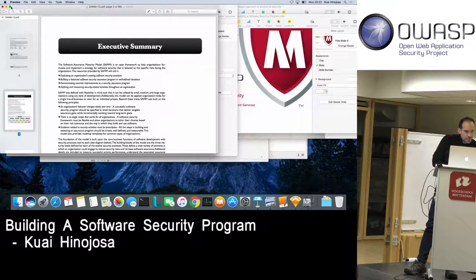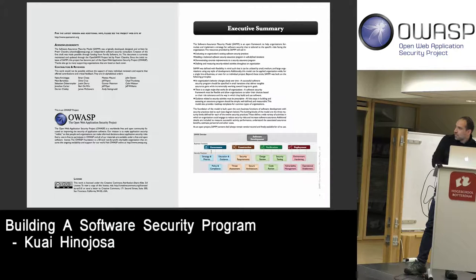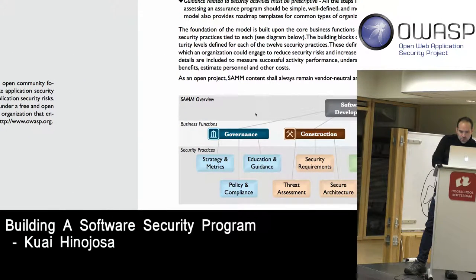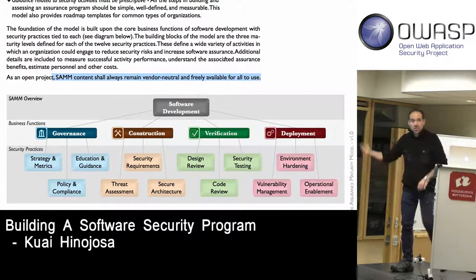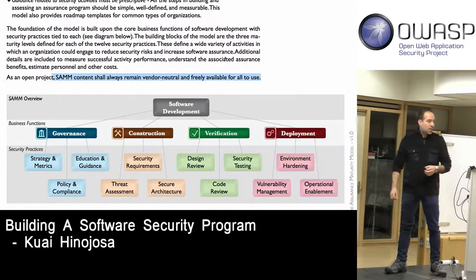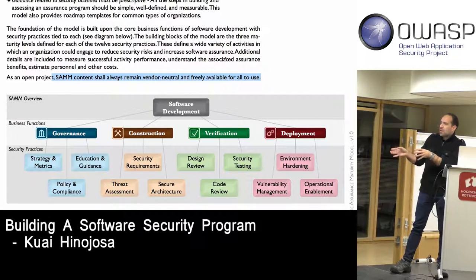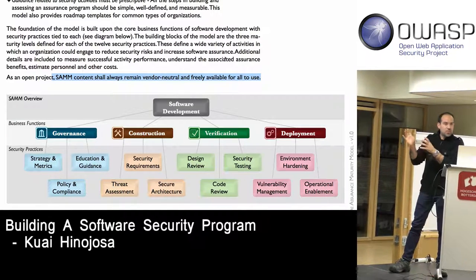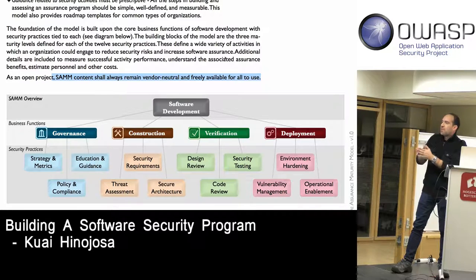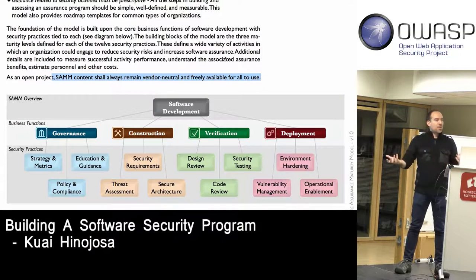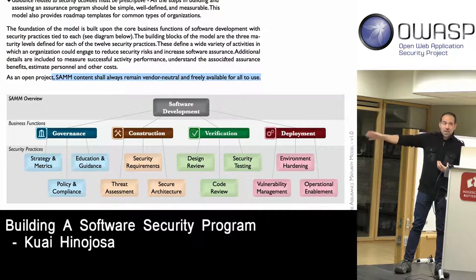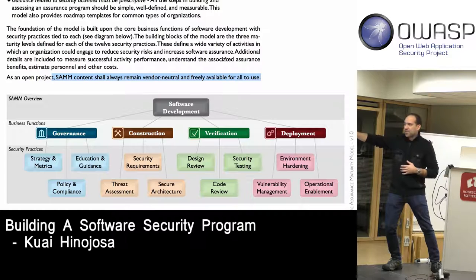Based on those patterns, Pravir defined four business functions of software development — meaning that any organization dealing with application lifecycle management or developing software needs to have at least these basic functions. Those are: governance, construction, verification, and deployment — the very first layer you see there. Under governance you see practices like strategy and metrics, education and guidance, and policy and compliance — all the practices that support building a governance structure for an application security program.